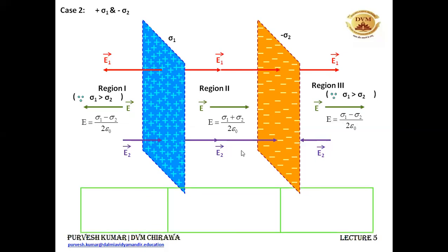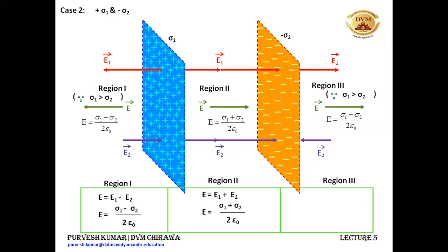Let's summarize: In region 1 it is E1 minus E2, that is (sigma 1 minus sigma 2) upon 2 epsilon naught. In region 2 it is E1 plus E2, that is (sigma 1 plus sigma 2) upon 2 epsilon naught. In region 3, E equals E1 minus E2, that is (sigma 1 minus sigma 2) upon 2 epsilon naught. So this is case 2.